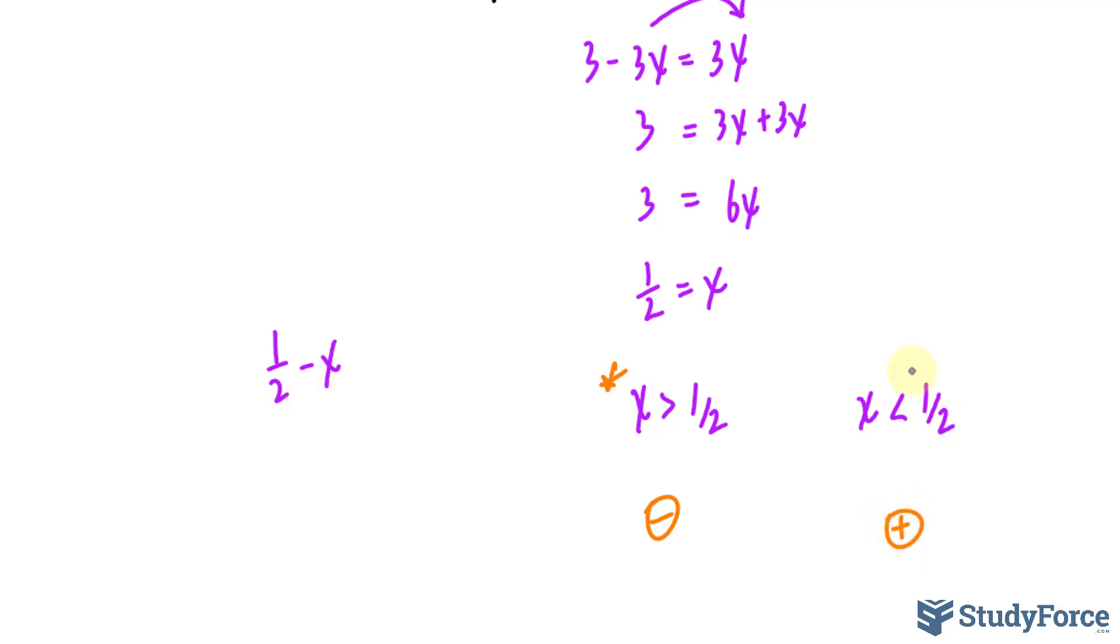We also need to find out what happens when x is equal to half. If we substitute half into here, we get 0. And since 0 is neither positive nor negative, you may put an equal sign under either one of these. It doesn't really matter. So you'll write this down as x being greater or equal to half. And for positives, you'll write down that x is less than half.